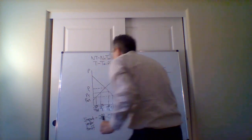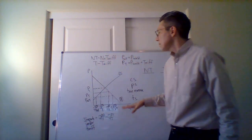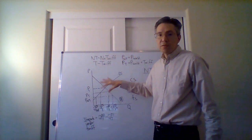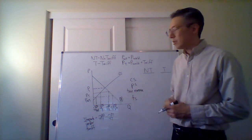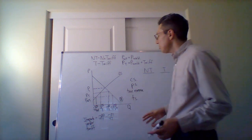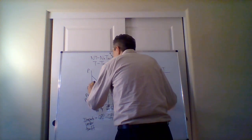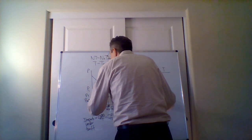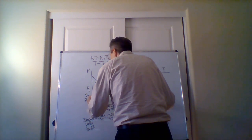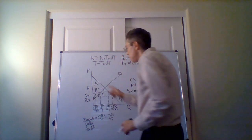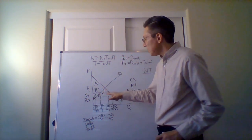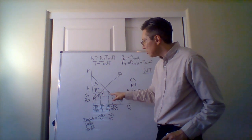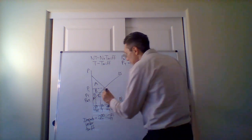Now that we've drawn this out, instead of using pens of different colors, we use a series of letters. What we want to do is compare what the surpluses are when we have the tariff versus when we don't. So we have basically A, B, C, D, E, F, G, and H here.